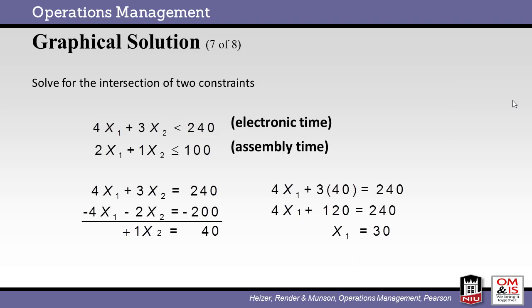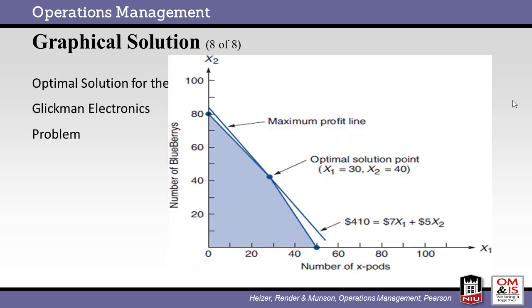Looking at the problem mathematically, we start with the capacity constraints for the two departments. We restate the equations here. Drawing upon your math knowledge, we are solving two equations with two unknowns. We replace the inequalities with equal signs and multiply the second equation by negative 2. Since we multiply both sides of the equal sign, the equation is still accurate. Adding the two equations together, we get that x2 equals 40. Substituting the value of x2 into the top equation, we find that x1 equals 30. Our solution is found at point (30, 40). Here we see the optimal solution plotted on the graph. To maximize profit, the company should build 30 x-pods and 40 blueberries.